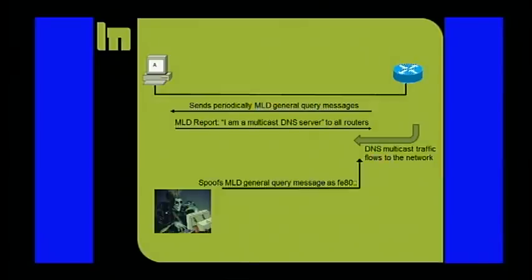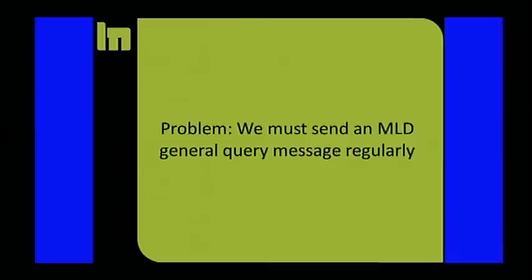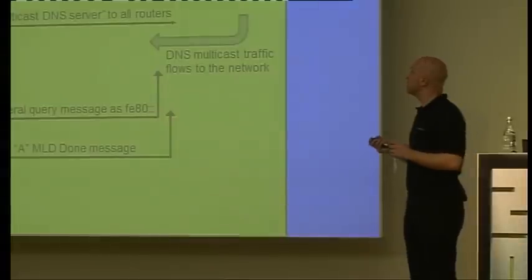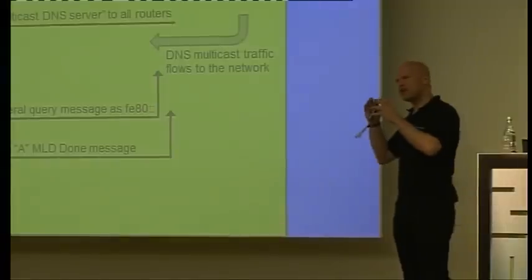So this is how it works. First, I spoof a general query message as FE80 and everything zero. The router sees that and then says, okay, I'm not the general query router anymore. This is this router here. So it doesn't send it anymore. If I now spoof my multi-listening message coming from A, we still have a problem. We must send the general query message in a special interval.